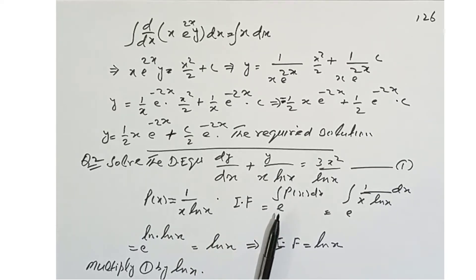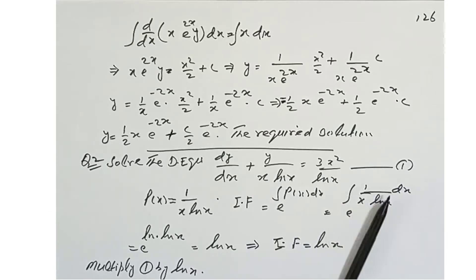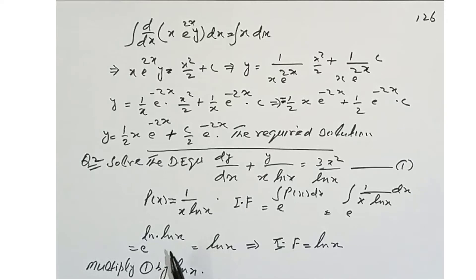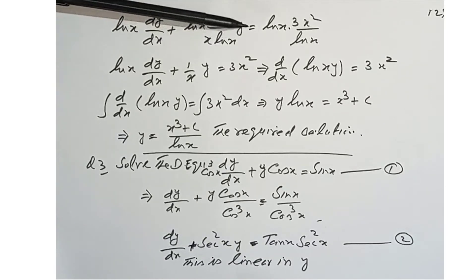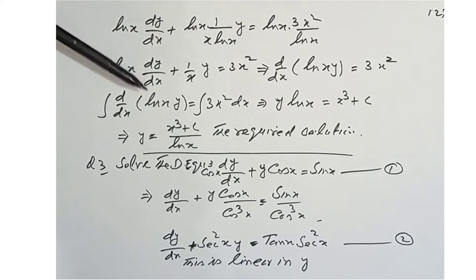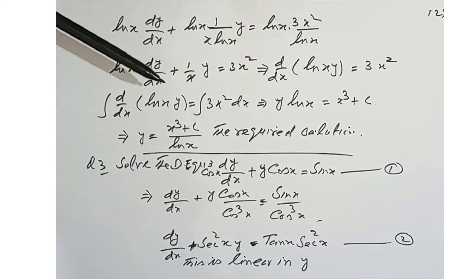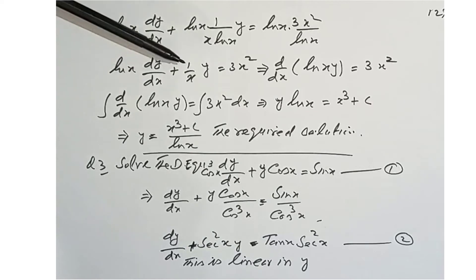We find the integrating factor: e to the integral of P(x)dx = e to the integral of 1/(x·ln x) dx. The integrand is of the form f'(x)/f(x) where f(x) = ln x, so the integral is ln(ln x), giving IF = ln x. Multiply the equation by ln x; after simplification and cancellation of ln x terms, we get: ln x · dy/dx + (1/x)y = 3x.